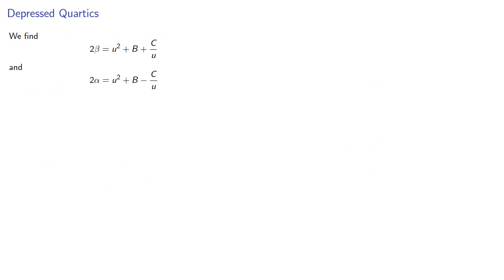So we know two alpha and two beta, so if we multiply them together we get the product. And remember the product alpha, beta, is equal to d, the constant in the original equation. So we can simplify.